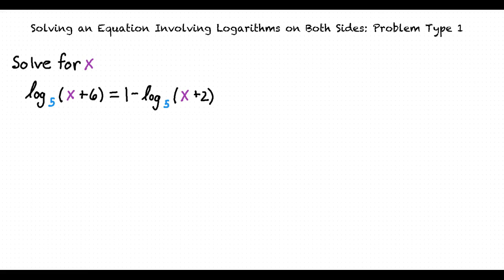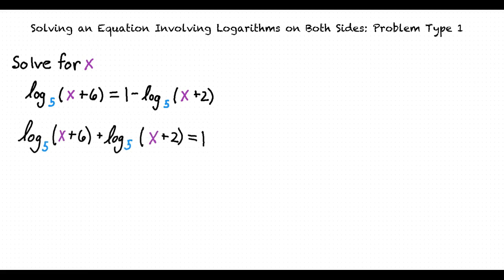What should we do first? Our first step is to move all the logarithms to one side of the equation by adding the base 5 logarithm of (x plus 2) to both sides. Because these two logarithms have the same base and are being added together, we can use the logarithm product rule.